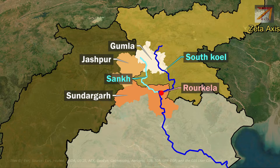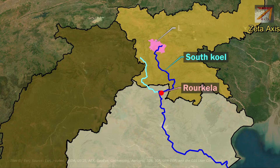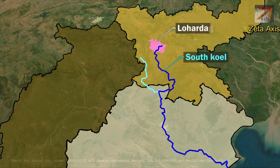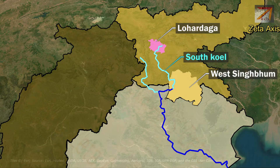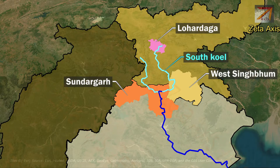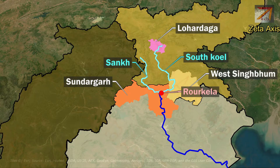The South Koyal river originates from Lohardaga district of Jharkhand in the Chota Nagpur Plateau. It flows through West Singhbhum district in Jharkhand and enters Odisha in Sundargarh district, where South Koyal merges with the Sankh river at Vedavyas near Rourkela to form the Brahmani river.